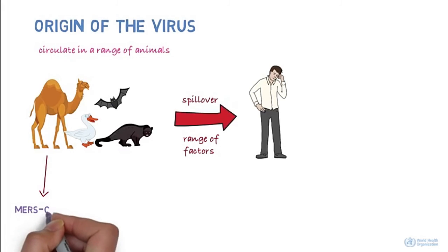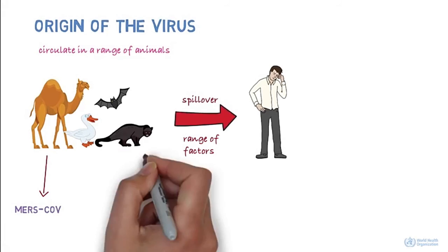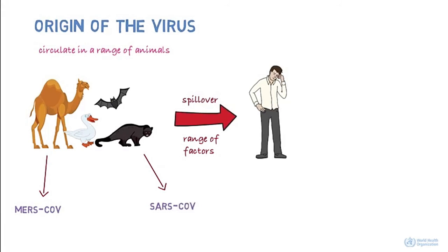For example, MERS-CoV is known to be transmitted from camels, and SARS-CoV from civet cats. The animal reservoir of the 2019 novel coronavirus is not known yet.